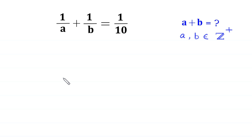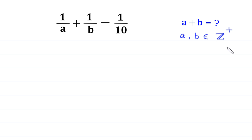Hello everyone, welcome to how to solve this very nice Diophantine equation: 1 over a plus 1 over b is equal to 1 over 10. Our job is to find all possible values of a plus b, where a and b are positive integers — meaning a is greater than 0 and b is greater than 0.